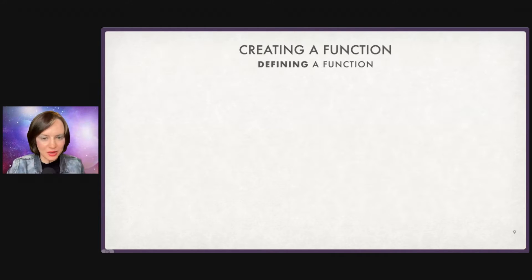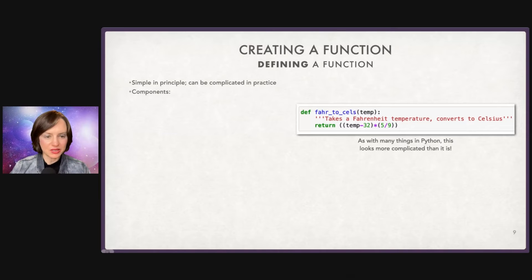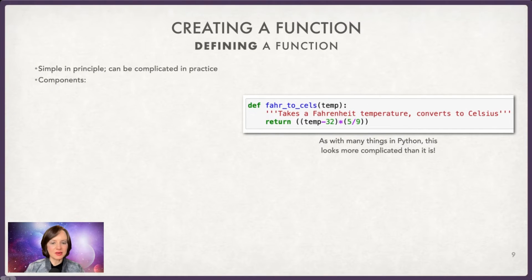So here is how we're going to create a function. This is one of those things that can be very simple, and it can get very unwieldy very fast. So let's start simple. Here's a function. What do you think this function does? Well, I hope I've made it clear in the way I've written it, but it takes a Fahrenheit temperature, and it converts to Celsius. As with much in Python, this looks more complicated than it is. This actually is just a few pieces put together to carry out this particular task, and we can break down these components.